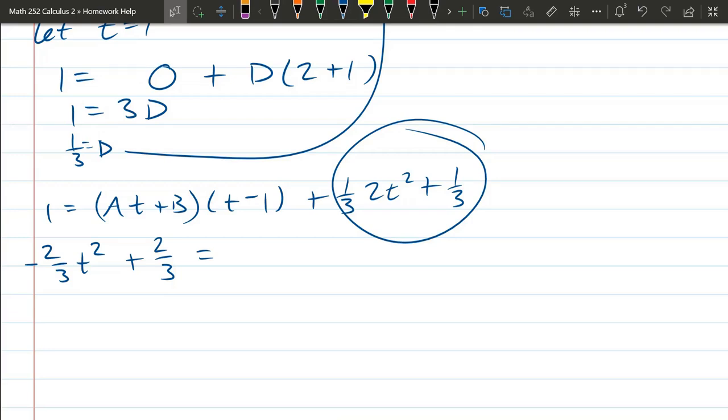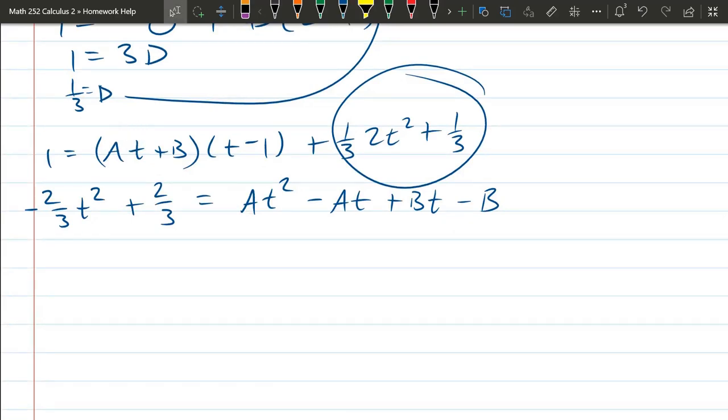So a t times t is a t². So that tells me right there what a is. Outside is minus a t. Inside is plus b t. And b times negative 1 is negative b.